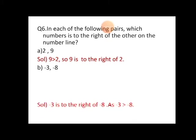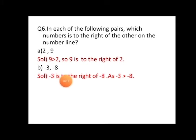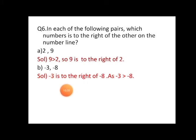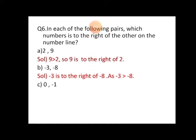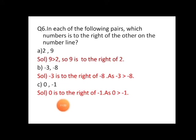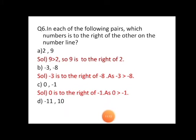Next question: minus three and minus eight — both are negative numbers. Minus eight is marked further to the left of zero, and minus three is also to the left but closer to zero. So minus three is to the right of minus eight, meaning minus three is greater than minus eight because minus three is closer to zero. Similarly, zero is to the right of minus one since minus one is negative and less than zero.